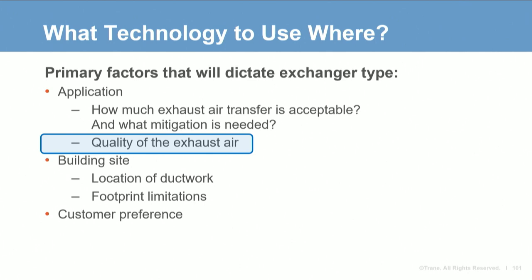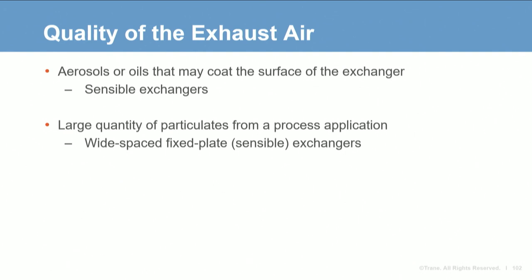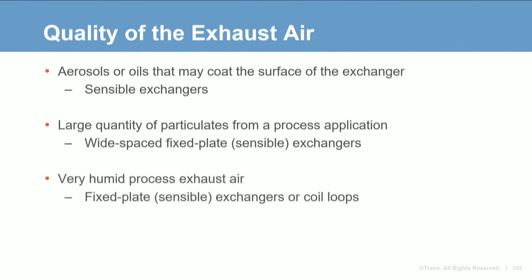In some cases the type of exchanger is driven by how much exhaust air transfer is acceptable; in other cases it's driven by the quality of the exhaust air. For instance, if there are oils or aerosols in the exhaust airstream that can coat surfaces and prevent latent transfer, sensible exchangers should be used. If there's a large source of particulates or soot that could accumulate on exchanger surfaces, wide-spaced metal plate exchangers are the best fit since they're easiest to clean and have the widest spacing. If the exhaust air is very humid, sensible plate exchangers or coil loops are the best fit, as they are designed to handle and remove large amounts of condensate.